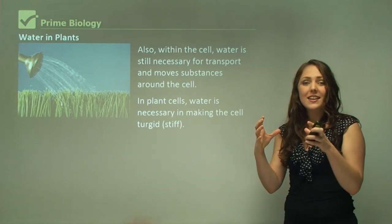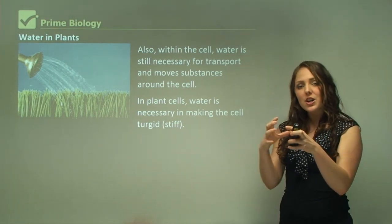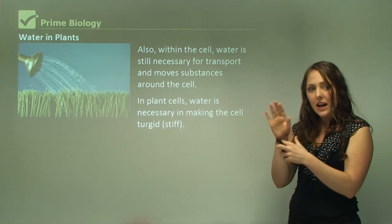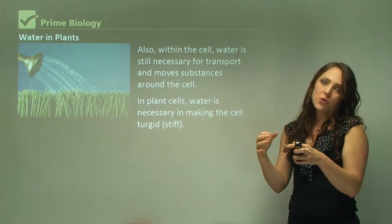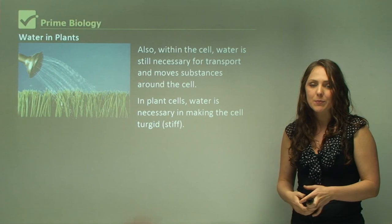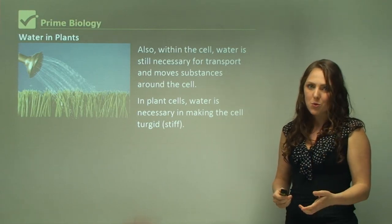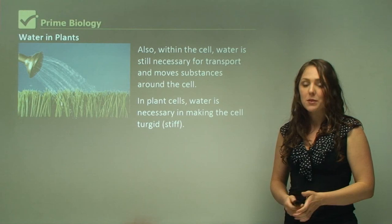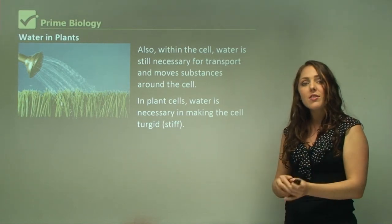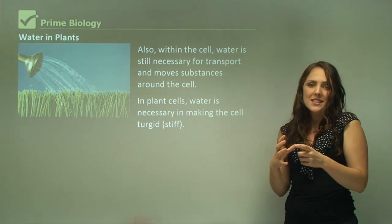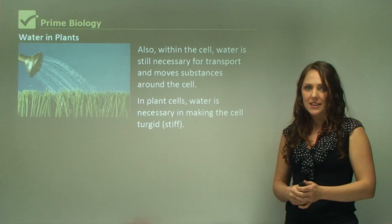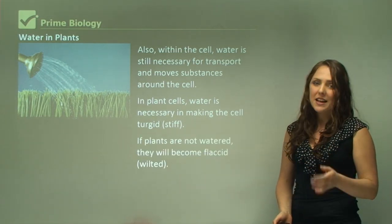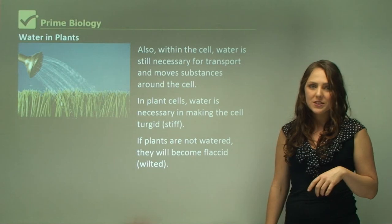If the cell is not filled with water you'll actually find that it's not turgid or stiff, which means that the actual plant might droop or wilt. So those cells need more water. If you're not feeding your plants enough water they will wilt and they will die. If you do not give them any water, but if you give them a little bit of water the cells become turgid again, which means that they expand to their maximum size. If plants are not watered they will become flaccid. Flaccid is the other term for wilted.